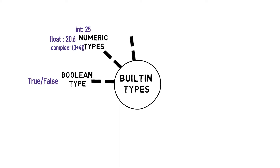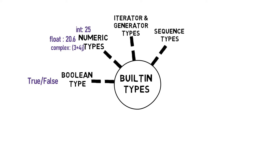Then we have iterator and generator types. Next we have sequence types, which includes lists, tuples, and ranges.